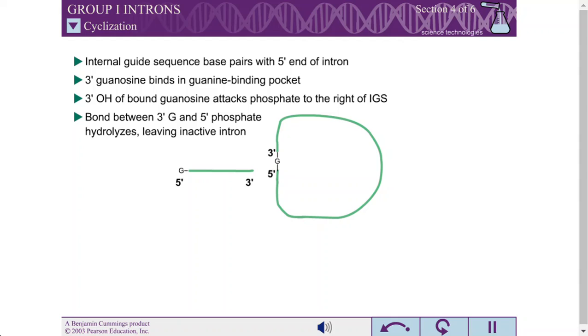The new bond between the 3' guanosine and a phosphate at the 5' end of the intron is easily hydrolyzed. However, since the intron has been cleaved, the intron is unable to fold properly and catalyze the reverse reaction to splice itself back between the exons.